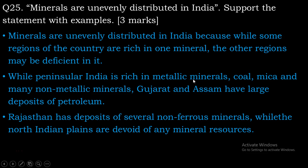While peninsular India is rich in metallic minerals like coal, mica and many other non-metallic minerals, Gujarat and Assam have large deposits of petroleum. Dekho, ek taraf agar dekha jaaye, toh jo Indian Peninsula hai — jaise south India ki taraf hai — toh wohan pe metallic minerals, coal ye sab zyada hai. Jabki Gujarat aur Assam — humare west aur east side ke ye states — wohan pe petroleum ke deposits bahut zyada hai. Gujarat aur Maharashtra ke karib jo Bombay hai, wohan pe bhi kaafi saara petrol aur crude oil nikalta hai.